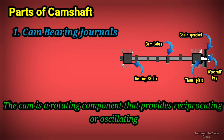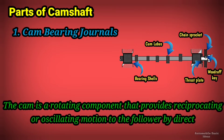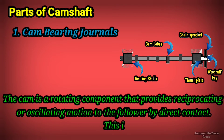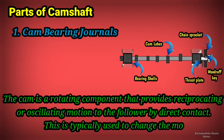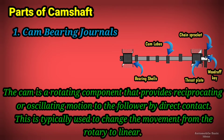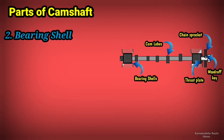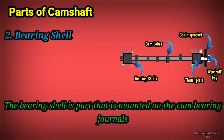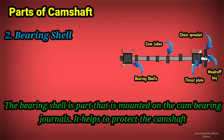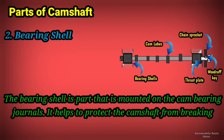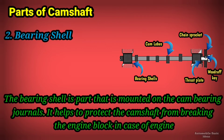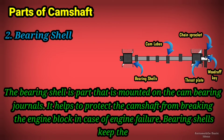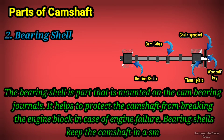The cam is typically used to change the movement from rotary to linear. Two, bearing shell — the bearing shell is a part that is mounted on the cam bearing journals. It helps to protect the camshaft from breaking the engine block in case of engine failure, and keeps the camshaft in smooth rotation.